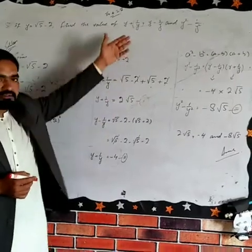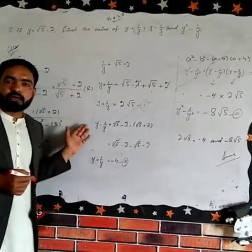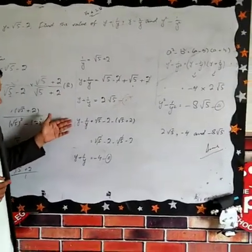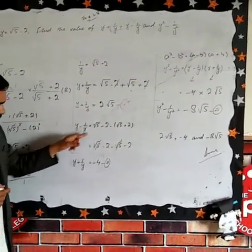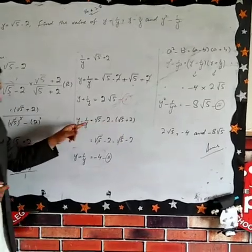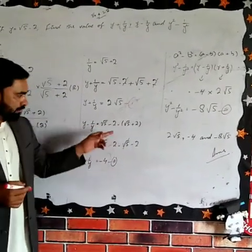2√5 is the first answer. The second answer is very easy: Y - 1/Y. Y is √5 - 2, minus sign, and 1/Y is √5 + 2.